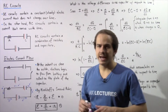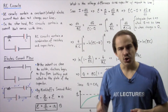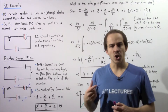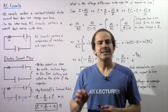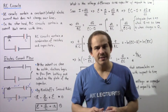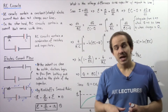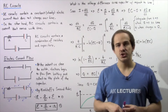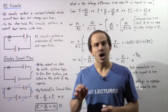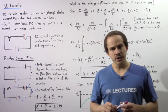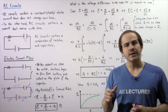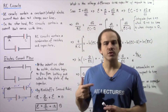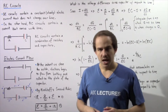On the other hand, RC circuits contain an electric current that does depend on time. In fact, as we'll see in just a moment, inside an RC circuit, the electric current decreases over time.